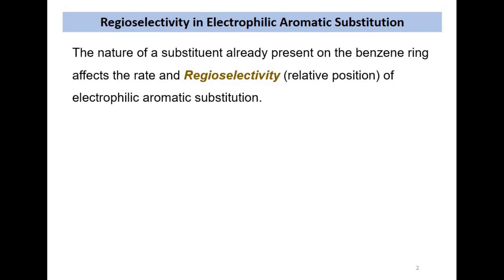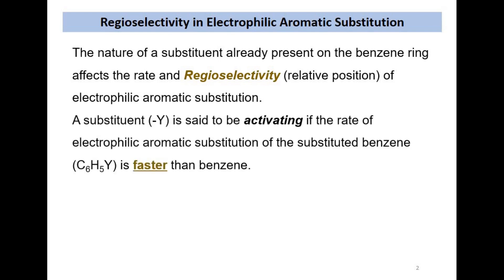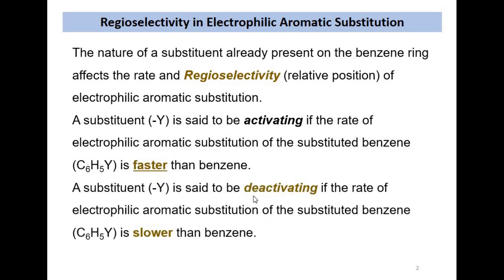There are some substituents attached with the benzene ring — either they are activating the ring or deactivating the ring. A substituent is said to be activating if it makes benzene more reactive than benzene itself, and this reactivity depends upon the nature of the group Y. There are certain other substituents that make the benzene ring less reactive than benzene, and these groups are known as deactivating groups. Deactivating groups make benzene slower in electrophilic substitution reactions, while activating substituents make benzene more reactive.